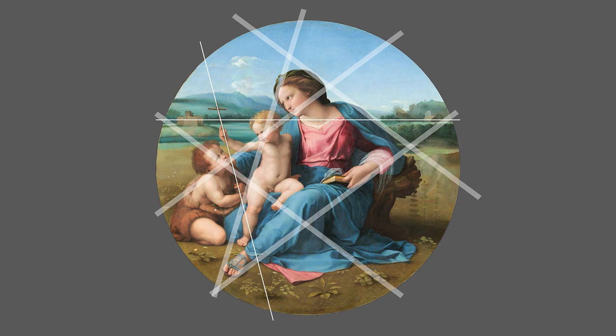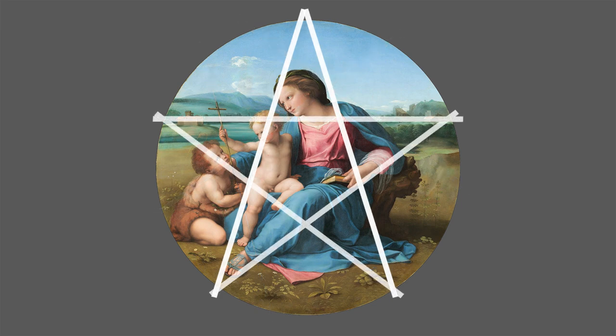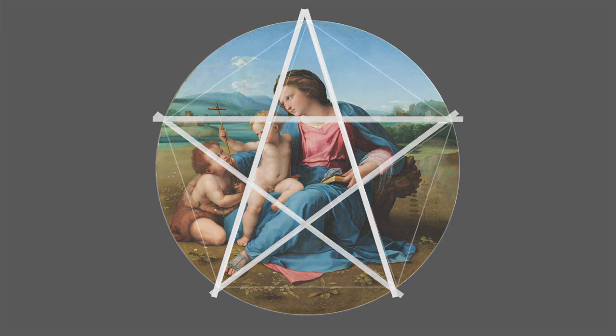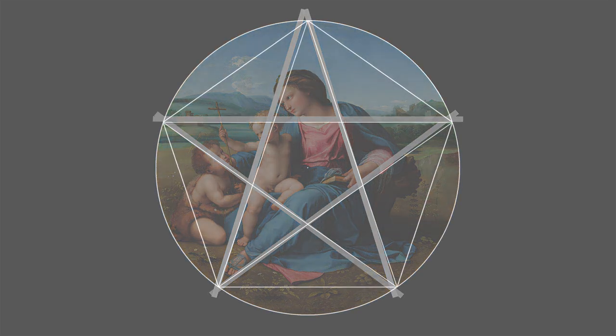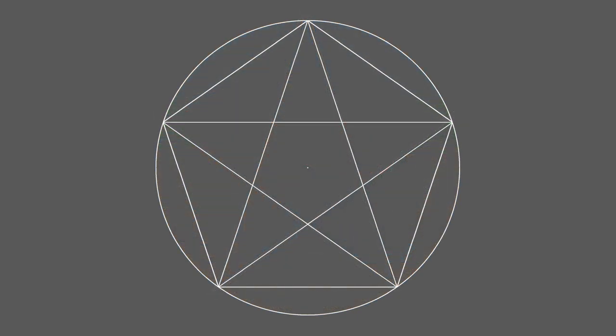I'd reverse-engineered from the painting a near-perfect equilateral pentagram. All I had to do was add another line, mirroring C, and there it is. I then spent some time learning to construct a pentagon, one that enclosed a pentagram, and those inside a circle, like this.